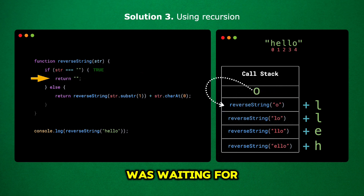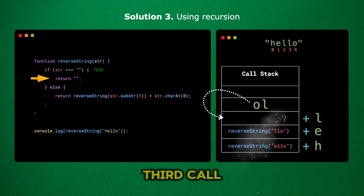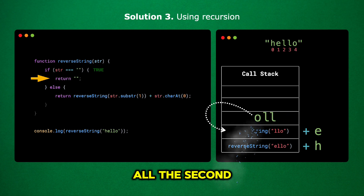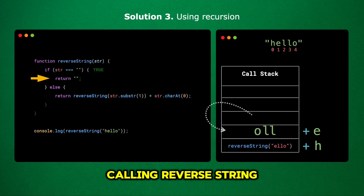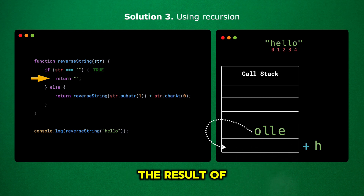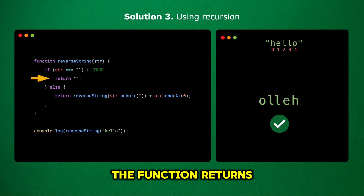The fourth call was waiting for the result of reverseString with 'o', which is now 'O', so it returns 'O' plus the letter 'L', giving us 'OL'. The third call returns 'OL' plus 'L', giving 'OLL'. The second call returns 'OLL' plus 'E', giving 'OLLE'. Finally, the first call returns 'OLLE' plus 'H', giving us 'OLLEH'. The function returns 'OLLEH' as the reversed string, which is exactly what we wanted.